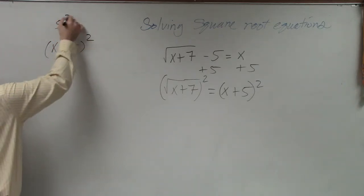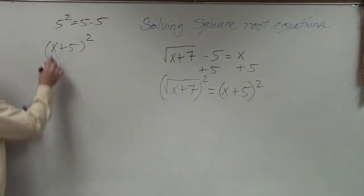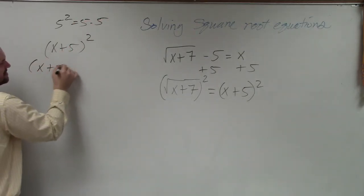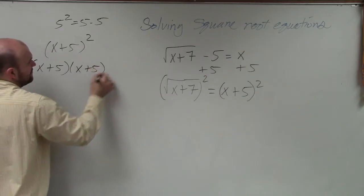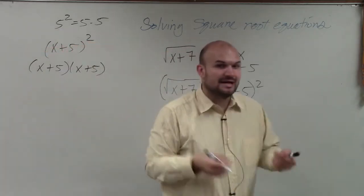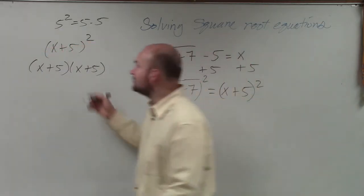Well, first of all, guys, 5 squared means 5 times 5. So x plus 5 squared means x plus 5 times x plus 5, right? You've got to multiply them by each other. So now you have to use FOIL.